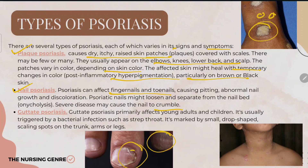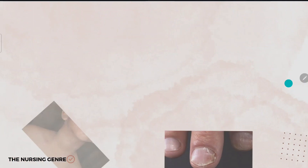Guttate psoriasis primarily affects children and young adults and is usually triggered by a bacterial infection such as strep throat. It is marked by small, drop-shaped scaling spots on the trunk, arms, or legs. Plaque psoriasis affects the knees, elbows, lower back, and scalp, while guttate psoriasis mainly affects the trunk and limbs.